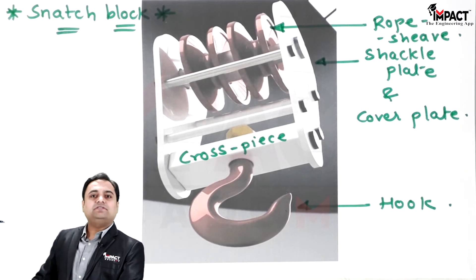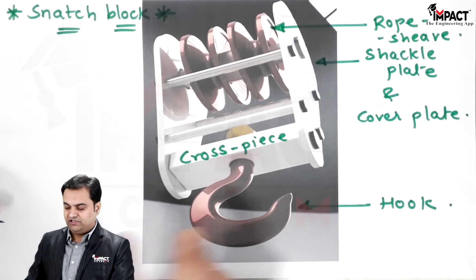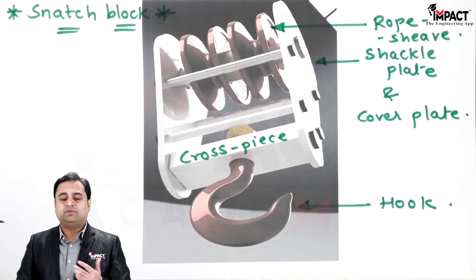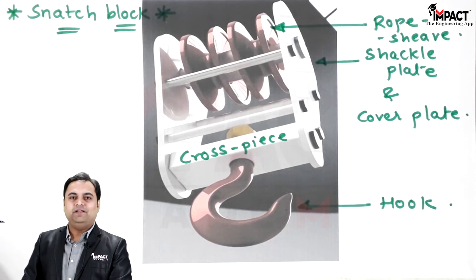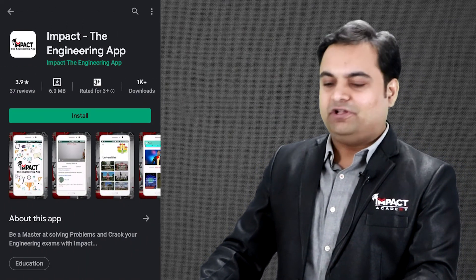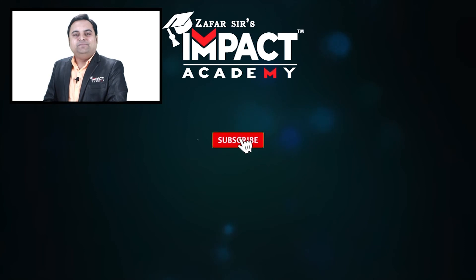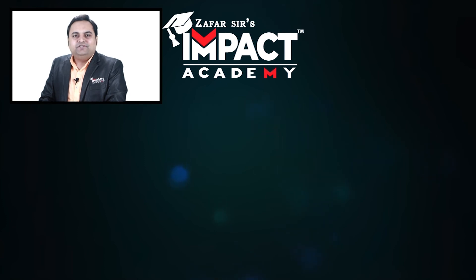Once the description is complete, we can design the full EOT mechanism — starting with the snatch block and then the traversing mechanism consisting of the drum, drum shaft, etc. For the complete design, you can refer to the Impact Engineering app. If you find the videos helpful, please like, share, comment, and subscribe to the channel. Thanks for watching.